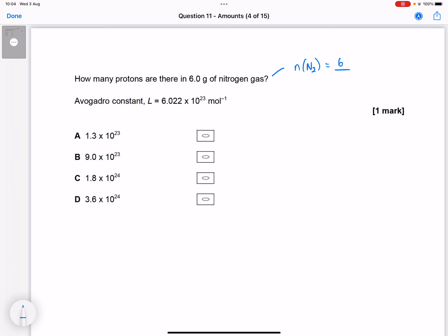N2, so 6 divided by the MR of N2, 6 over 28. So 6 divided by 28 on your calculator is 0.214 moles of nitrogen gas.